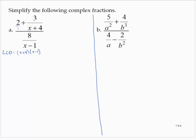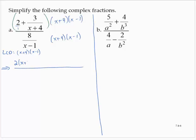So what I'm going to do is multiply the entire numerator by (x + 4)(x − 1) and the entire denominator by (x + 4)(x − 1). Since I have a quantity being added, I have to apply the distributive property. That gives me 2(x + 4)(x − 1) plus 3 over (x + 4), times (x + 4)(x − 1) in the numerator, and in the denominator 8 over (x − 1) times (x + 4)(x − 1).